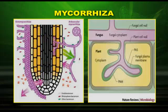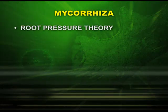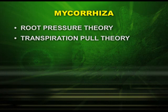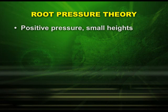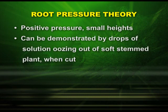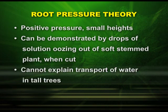When we study the movement of water up the plant, there are two widely accepted theories: the root pressure theory and the transpiration pull theory. The root pressure theory involves positive pressure and the movement of water molecules to small heights. It can be demonstrated by the oozing out of sap from a soft stem plant when cut. However, it cannot explain the transport of water in tall trees.